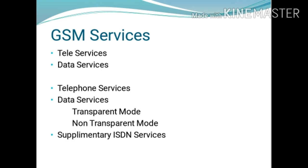The GSM service is divided into three different categories for the GSM user or subscriber: telephone services, data services, and supplementary ISDN services. Telephone services include emergency calling, fax, video text, mobile-originated traffic, base-originated traffic, and SMS.